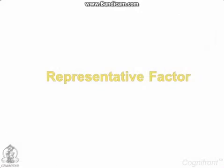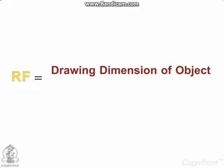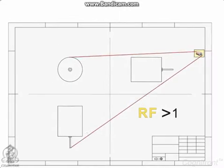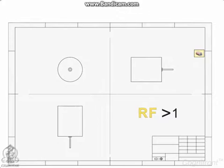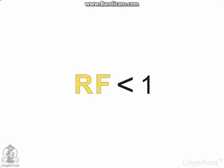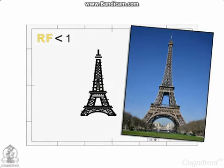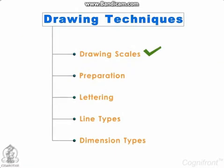The representative factor RF is a ratio of drawing dimension to the actual dimension of the object. If RF is greater than 1, then the drawing is enlarged. And if it is less than 1, then the drawing is a reduced view of the same object.